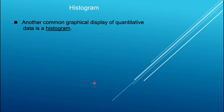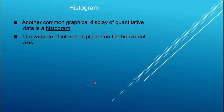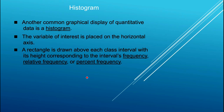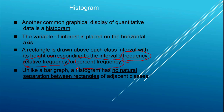A histogram is a graph that presents the same information as the frequency distribution, and it looks a lot like a bar chart. The variable of interest is placed on the horizontal axis, and a rectangle is drawn above each class interval with its height corresponding to the frequency, relative frequency, or percent frequency. Unlike a bar graph, a histogram has no natural separation points, so we typically don't put space between the rectangles.